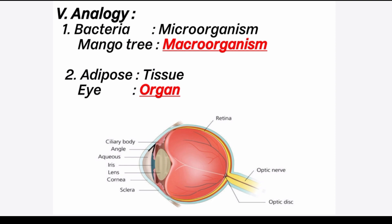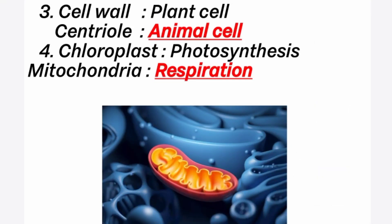Fifth section: analogy. First: bacteria is a unicellular organism, so it is called a microorganism. Mango tree is made up of many cells, so it is called a macroorganism. Second: adipose is a tissue — it contains fat-storing cells. Eye is an organ. Third: cell wall is found in plant cells; centriole is found in animal cells. Fourth: photosynthesis process takes place in chloroplast. Cellular respiration occurs in mitochondria.